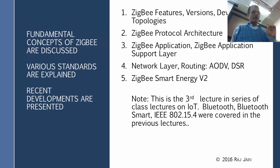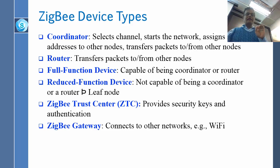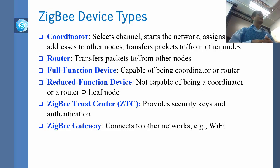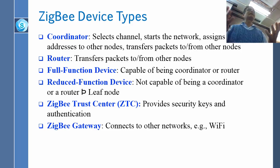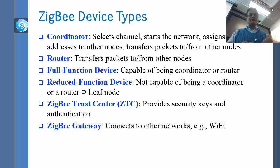The key thing to notice is that the coordinator and the router are functions, while the FFD and RFDs are capabilities. Functions can be placed anywhere as long as there is a capability for it. Functions can be packaged in anything. When you buy some box, it may have five functions in it. Capability is actually in some sense the name of the box. FFD is capable of routing, capable of coordination and being a leaf as well.